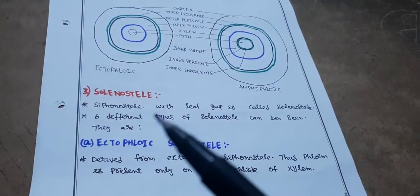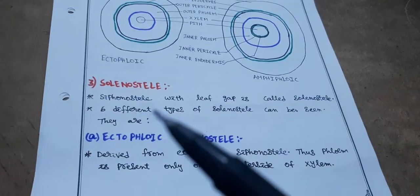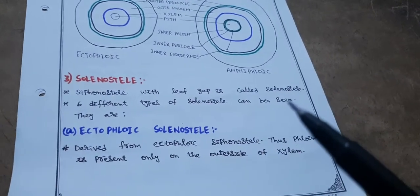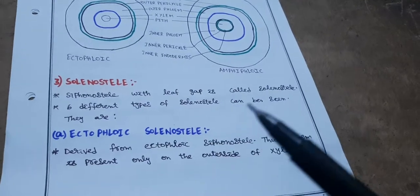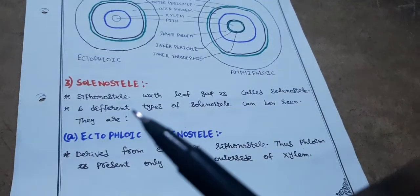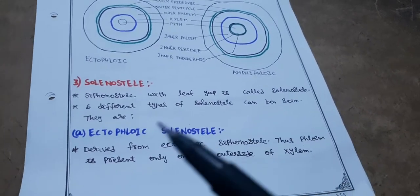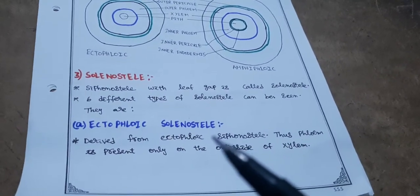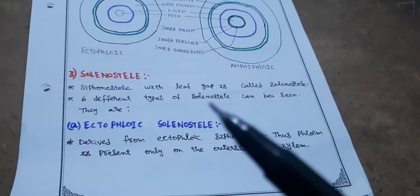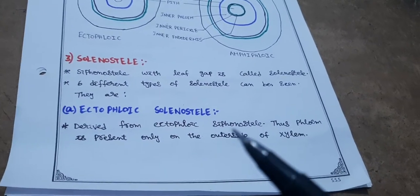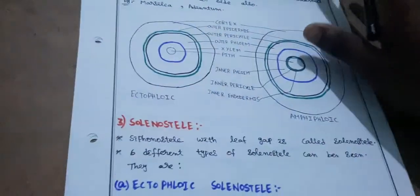Solenostele is a subdivision of siphonostele — a siphonostele with leaf gaps is called solenostele. Both pith and leaf gaps are present in solenostele. There are six different types of solenosteles. First, ectophloic solenostele is mostly similar to ectophloic siphonostele except that leaf gaps are present — derived from ectophloic siphonostele, so phloem is only on the outer side of xylem.